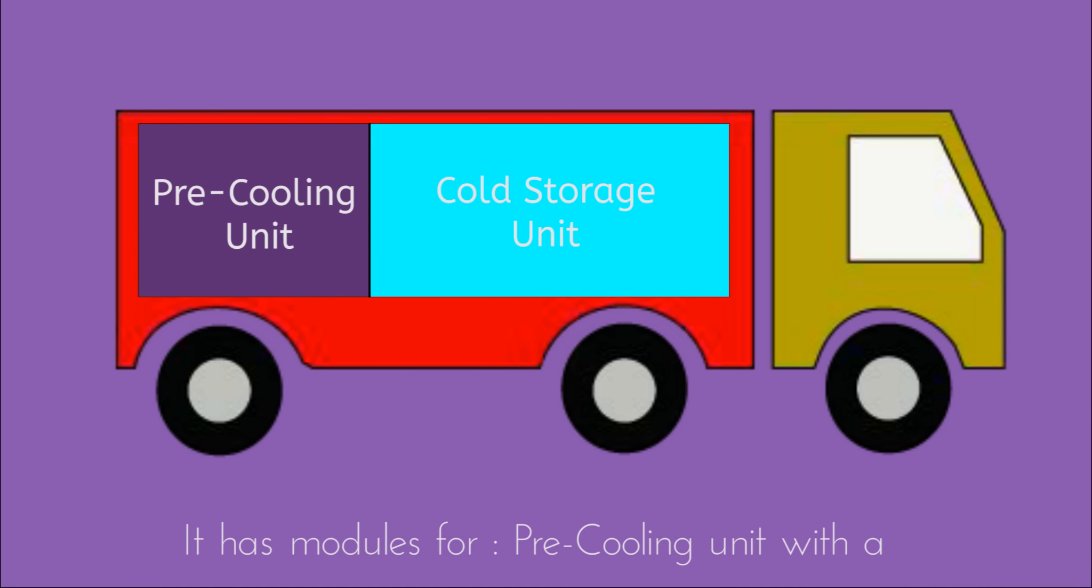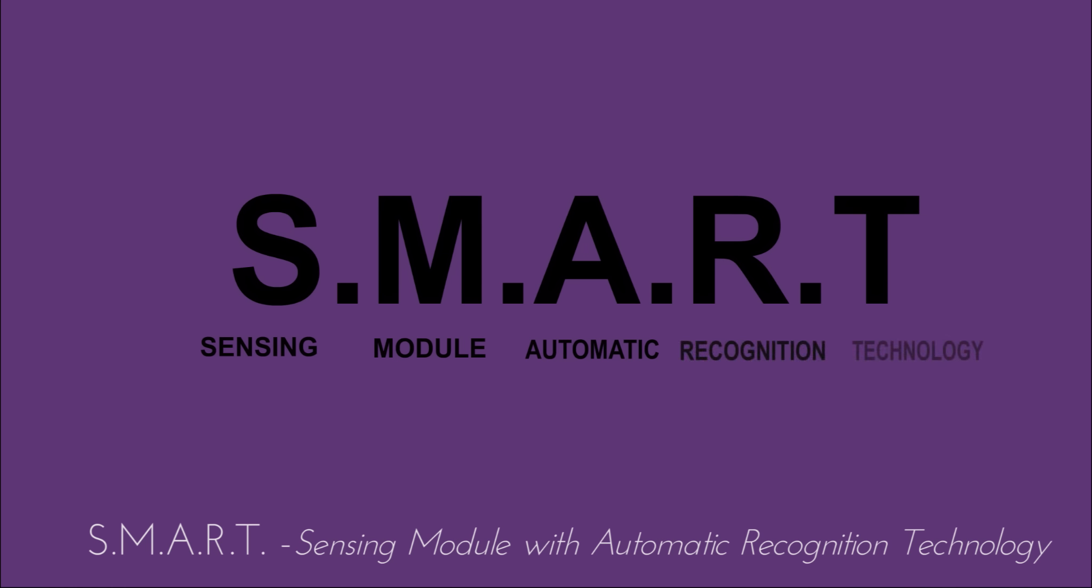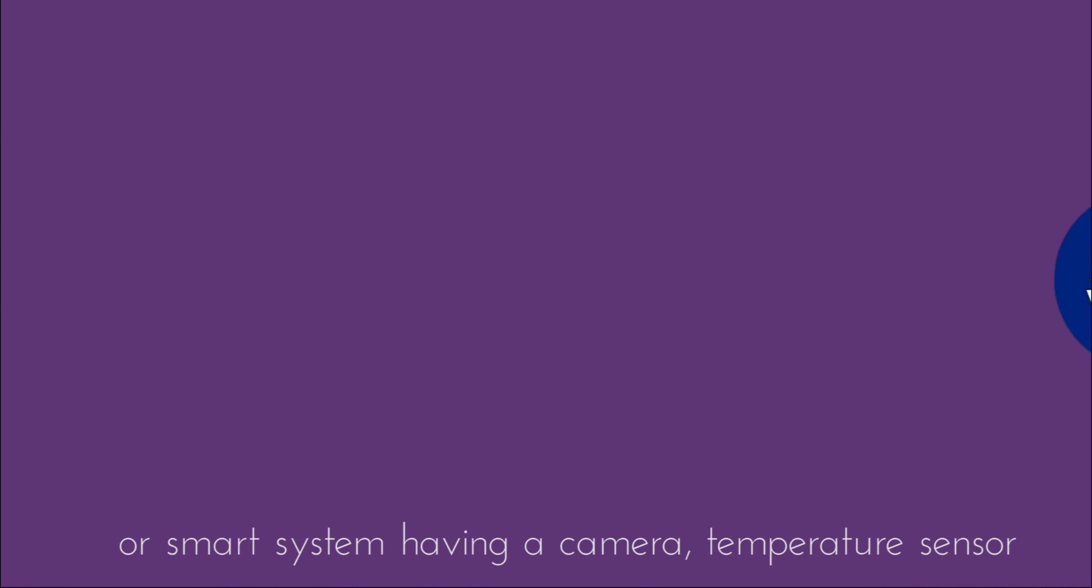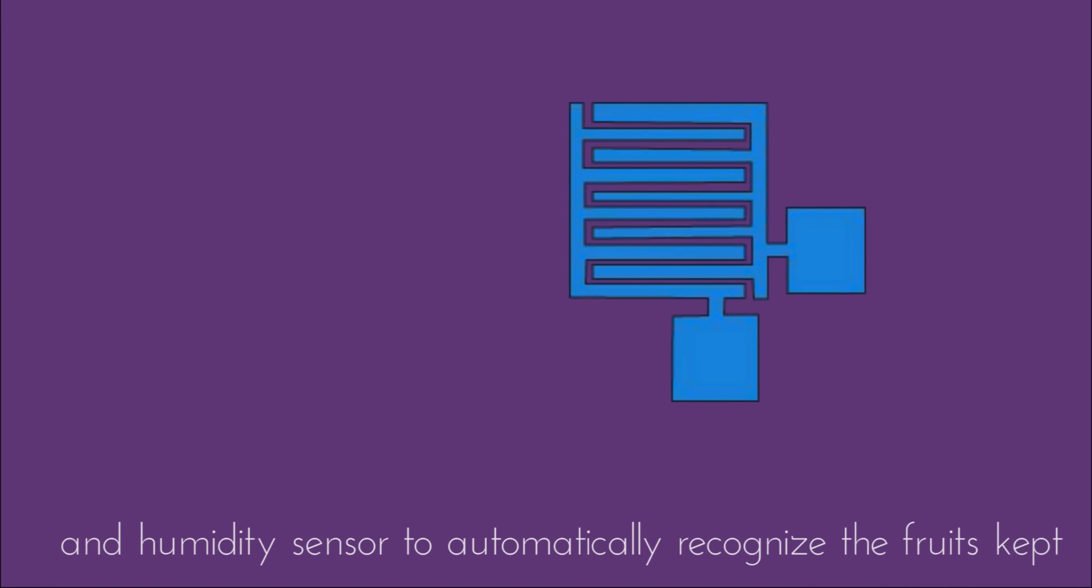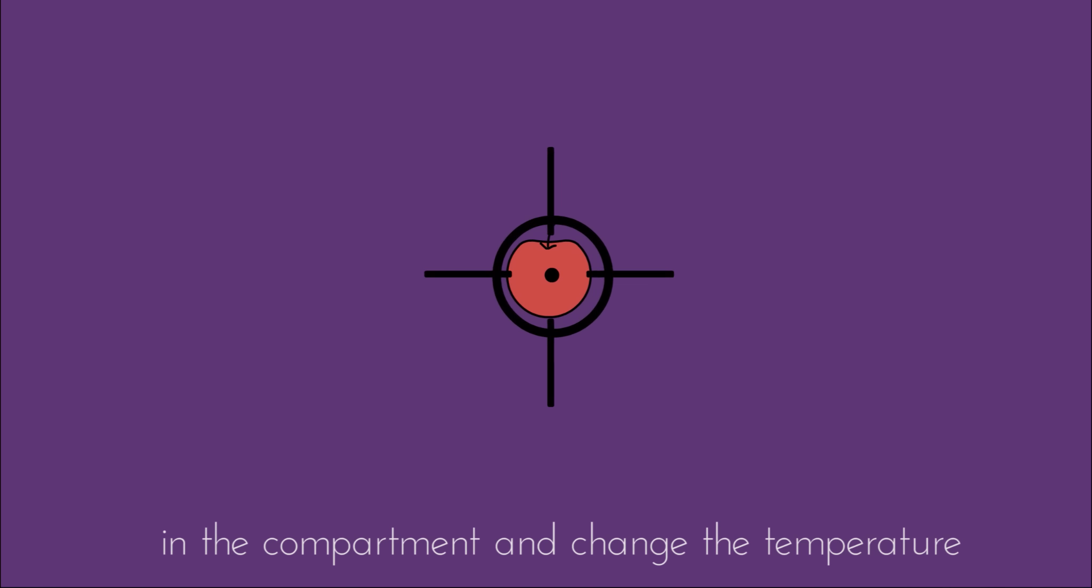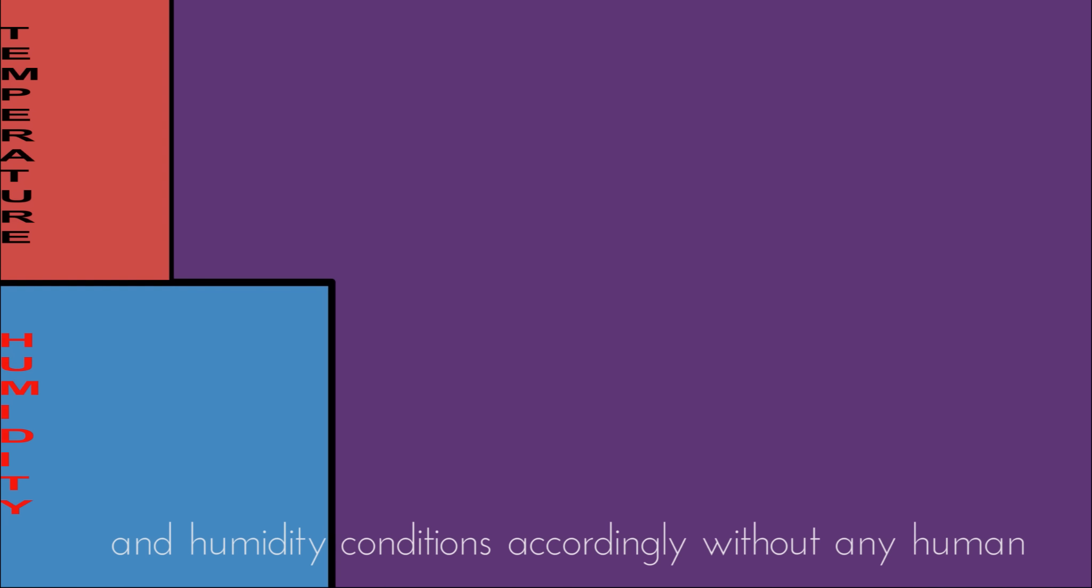It has modules for pre-cooling unit with a SMART, Sensing Module with Automatic Recognition Technology or SMART system having a camera, temperature sensor and humidity sensor to automatically recognize the fruits kept in the compartment and change the temperature and humidity conditions accordingly without any human interference.